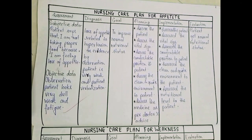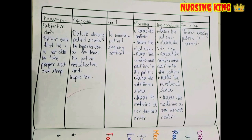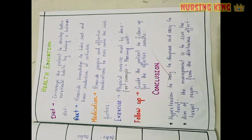After the drug chart, you have to write the nursing care plan. Before that, you write the nursing diagnosis. The nursing care plan has five components: assessment, diagnosis, planning, implementation, and evaluation. In assessment, you write subjective data and objective data.